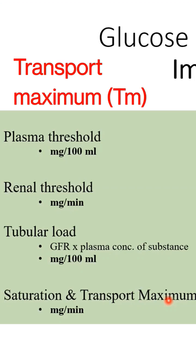These transport proteins have a finite number — they're not unlimited. So if you have a normal average amount of the substance arriving at the PCT and its respective carrier protein at the luminal border is available, everything is fine, no problems.